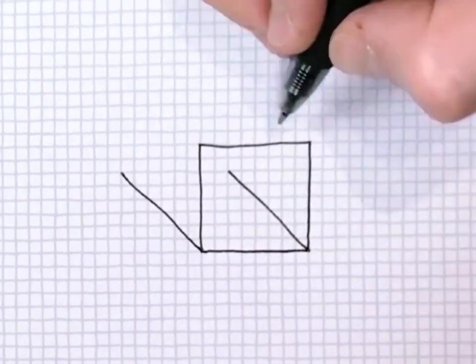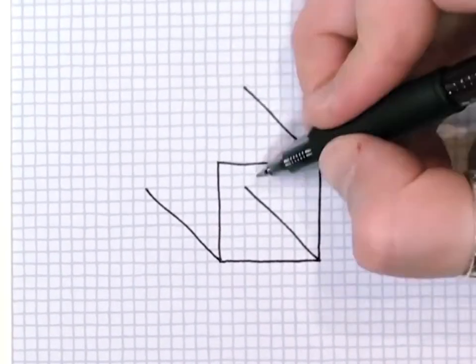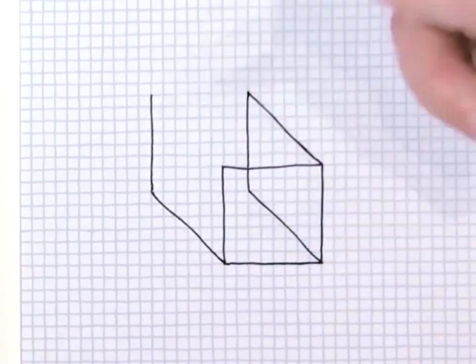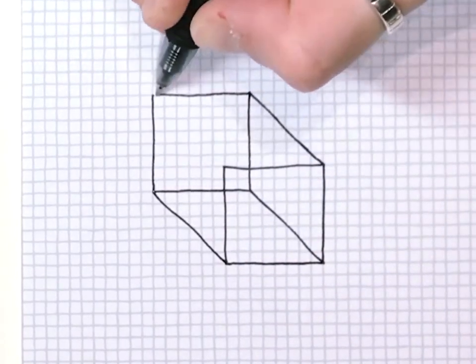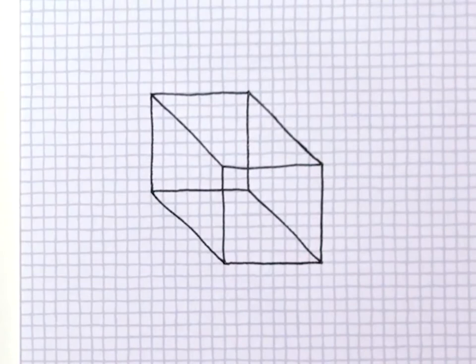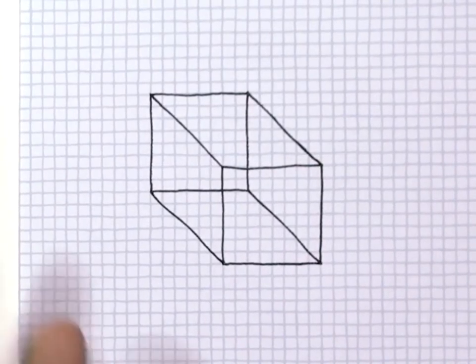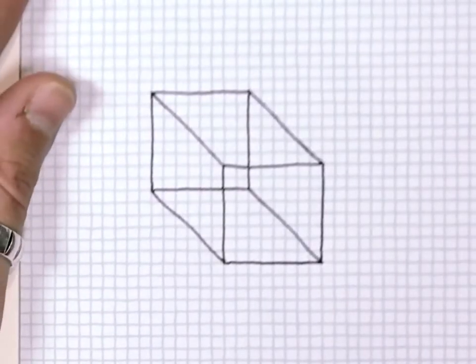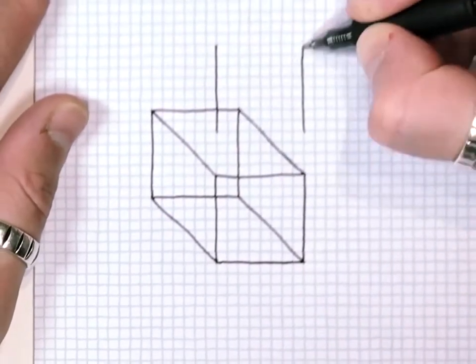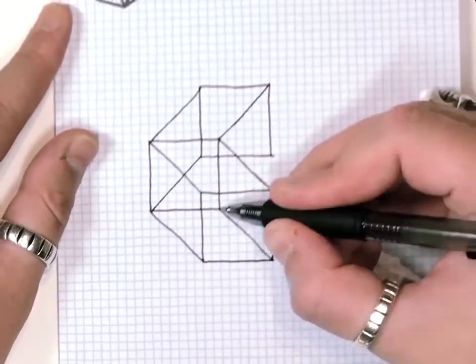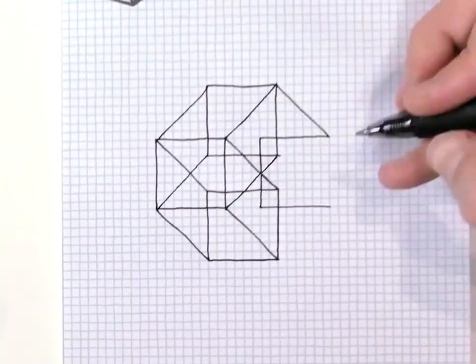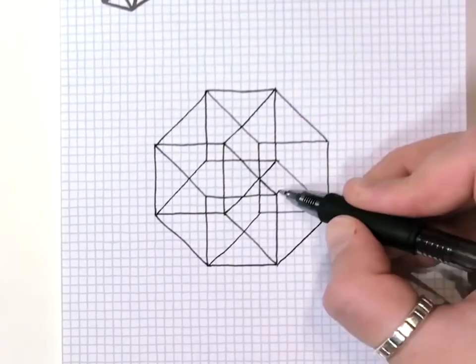If you take a two dimensional square and drag it perpendicular to itself into the third dimension, you get a cube whose sides are made out of squares. If you take a cube and drag it perpendicular to itself into the fourth dimension, what you end up with is a tesseract.